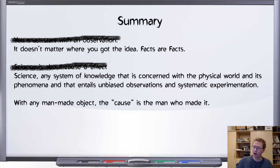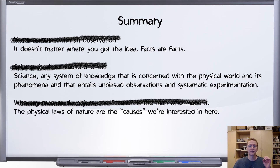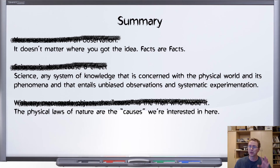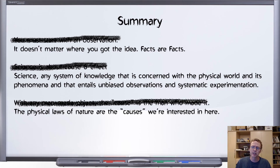Third: with any man-made object, the cause is the man who made it. Good try, but the physical laws of nature are the particular causes we're interested in when doing science. We're really not interested in the motivations behind why some scientist built a device, or why someone put lead balls next to other lead balls. We're concerned with: when we set them there and stopped touching them, we saw that they moved towards each other. There was an apparent attraction. Why did that happen? That's the cause we're trying to study.